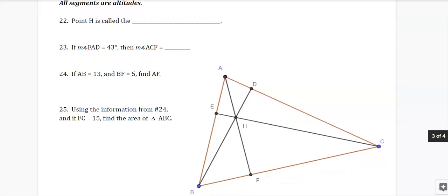Keep on going. All segments are altitudes. Altitude goes from the corner to the other side at 90 degrees. At 90 degrees and at 90 degrees. It's pretty weak. It doesn't really give you a lot of good information. But that point is called the orthocenter. And if the measure of angle FAD is 43 degrees, find ACF.